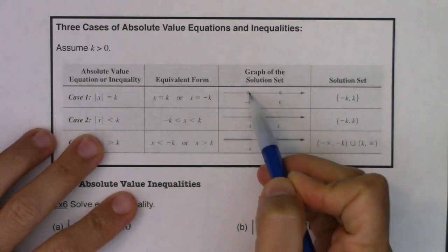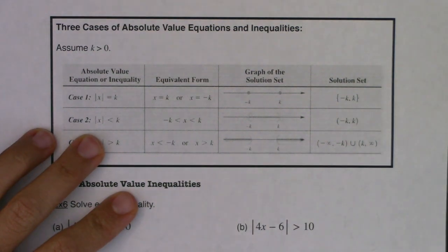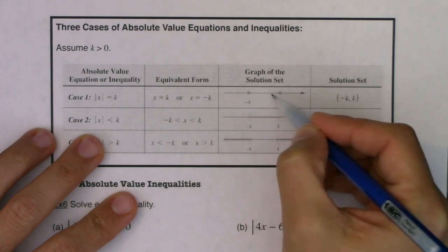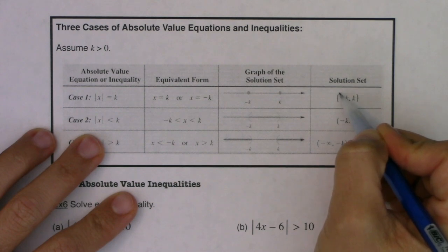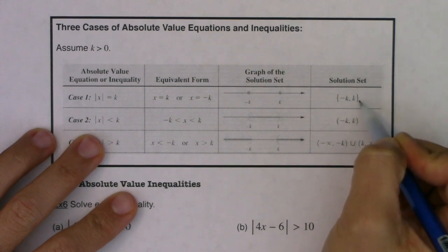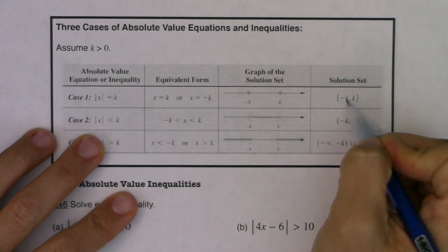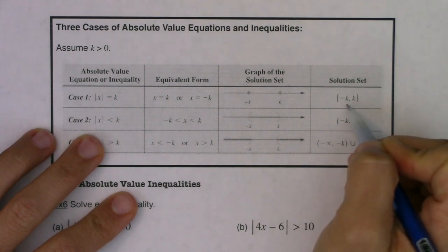If we wanted to graph the solution set, we would get two numbers, negative k and k, and write them in set notation. When you just have two isolated numbers and don't want all the numbers in between, we use these squiggly braces — not parentheses, not brackets. We just say negative k comma k; it's a list of two numbers and doesn't include everything in between.